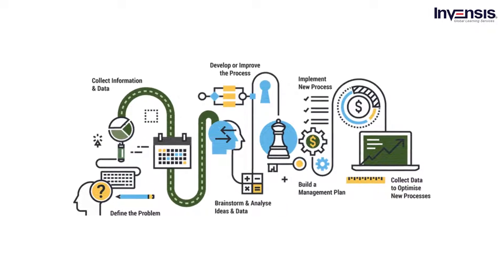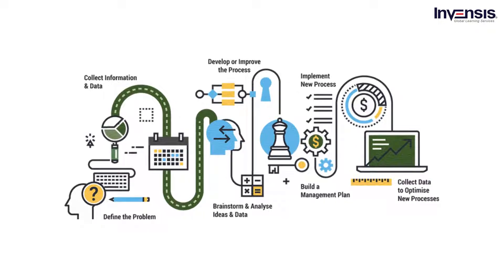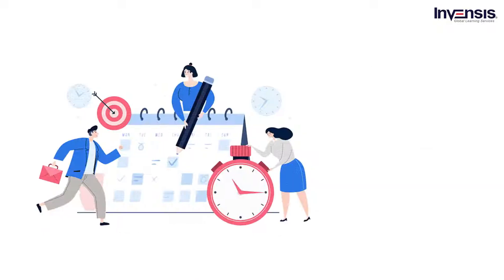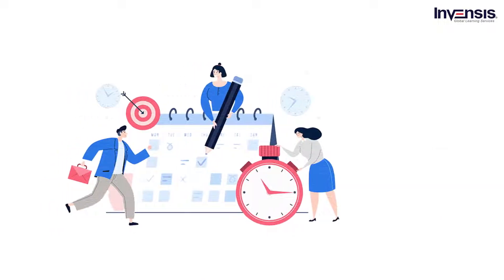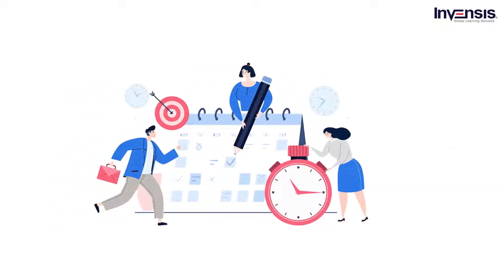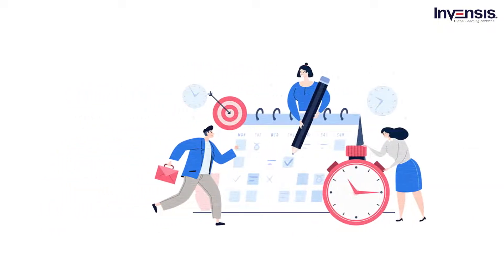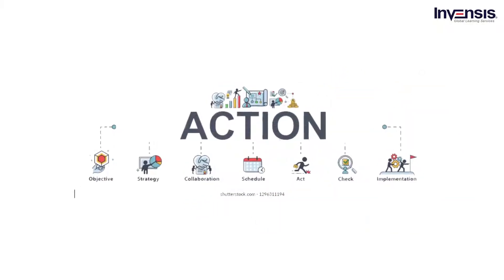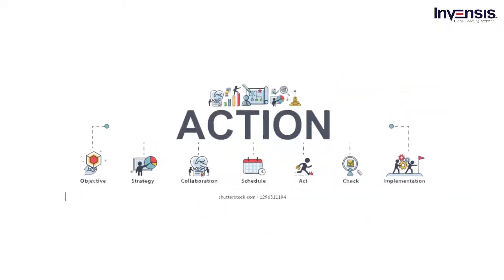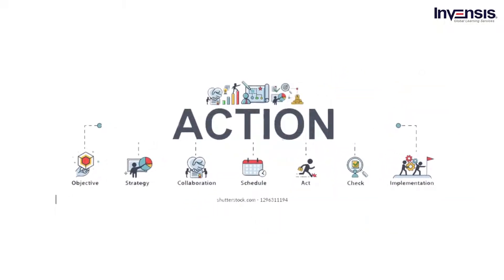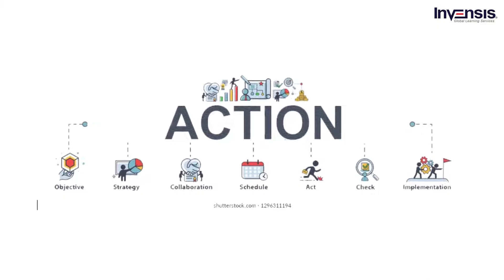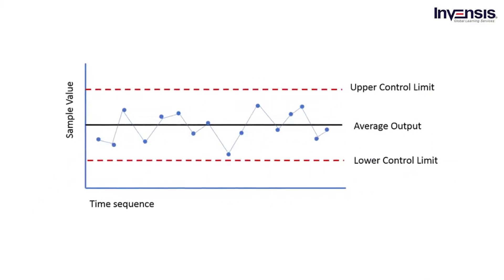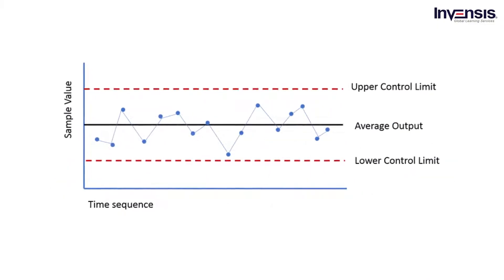No matter how well a business process is designed, there will always be a little variation within the process. If the variation keeps you away from meeting the deadlines, it negatively impacts the business process. In such a scenario, you will have to take necessary measures or actions to address what negatively impacts your business. And that is exactly where control charts are beneficial for your organization.